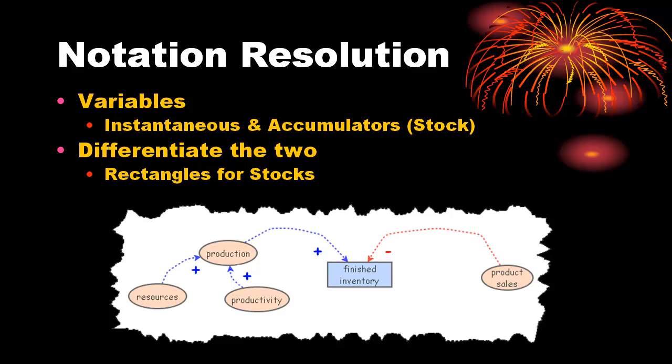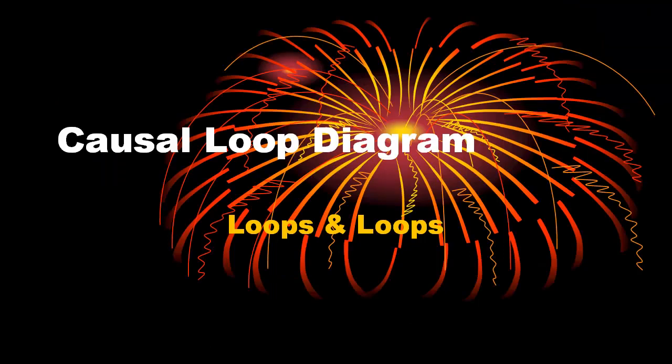One of the best ways to tell instantaneous variables from accumulators is to imagine what happens if time stops. When you stop time, there is no production and no product sales, though finished inventory still exists and doesn't change. To this point, the basic elements have been presented, though with a label like causal loop diagrams, there probably should be some loops involved. Please continue with Loops and Loops, the next video in this series.